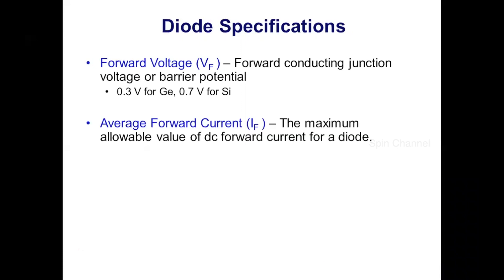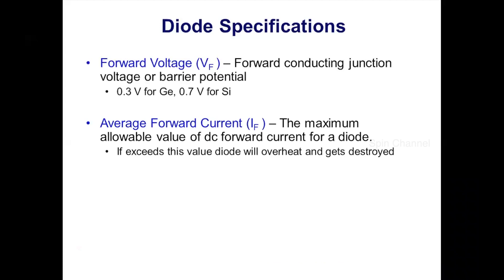Average forward current is the maximum current of forward conduction that the diode can carry for an infinite period of time. If the average current exceeds this value, the diode will overheat and eventually destroy itself.